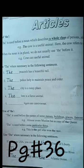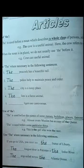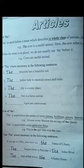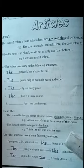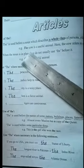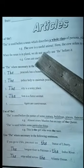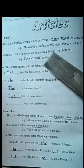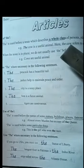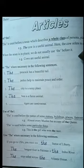Now class, open your workbook. Page number 36 — Articles, Use of THE. THE is used before a noun when the noun represents its whole class. For example: The cow is a useful animal — it means that all the cows are very useful.